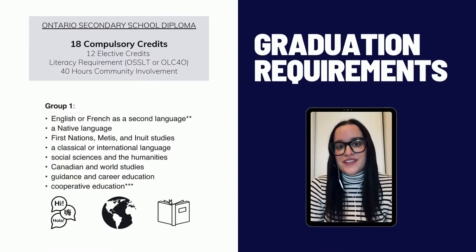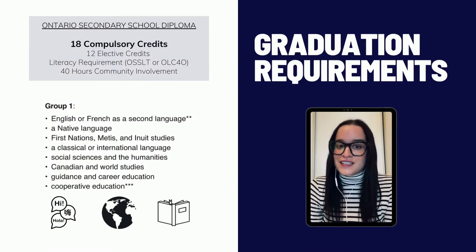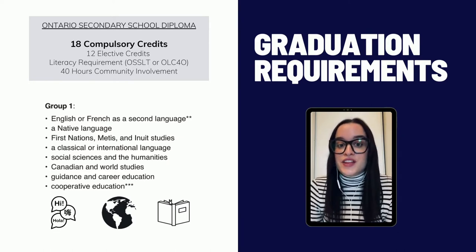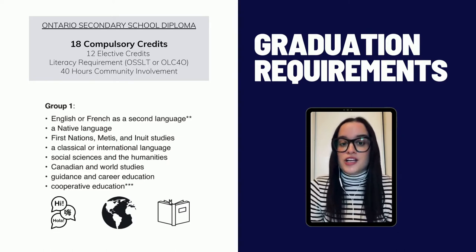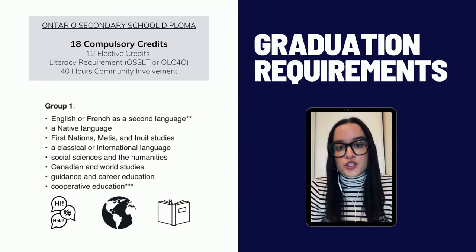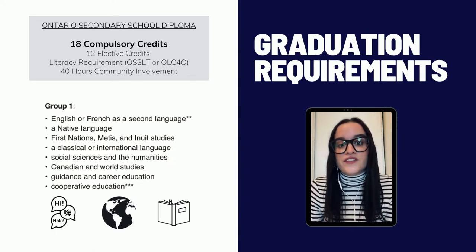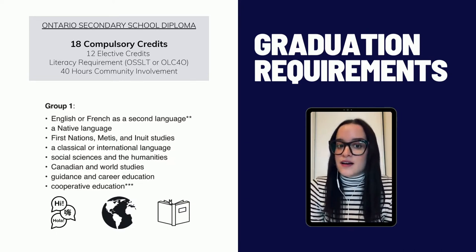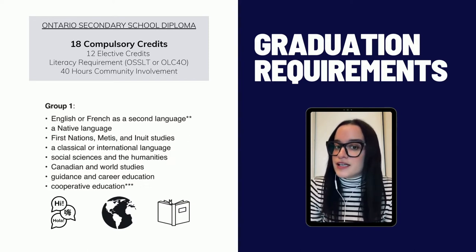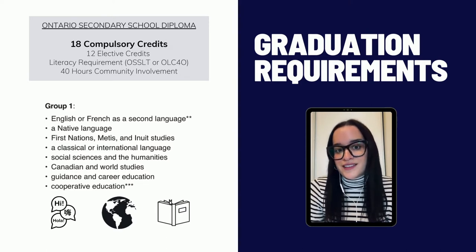The previous slide displayed the first 15 compulsory courses. The remaining three come in the form of group credits — a Group 1, 2, and 3 credit. For a Group 1 credit, a student must take an additional course falling under specific subheadings. An example of a Group 1 credit could be grade 10 French or a grade 11 American history, which falls under the social sciences.